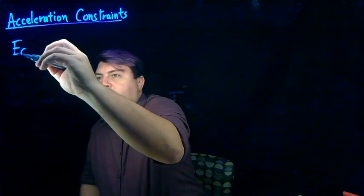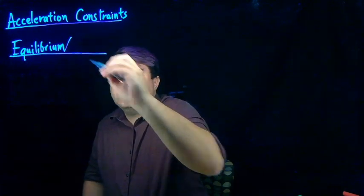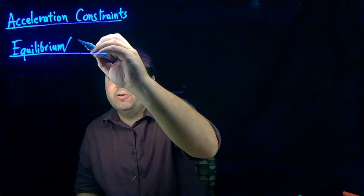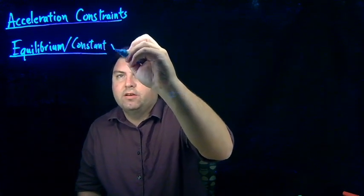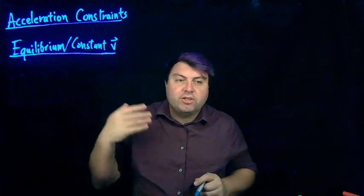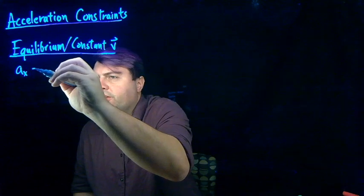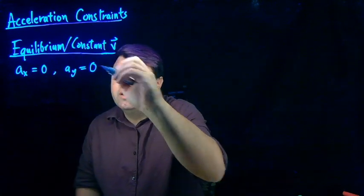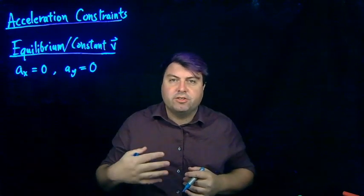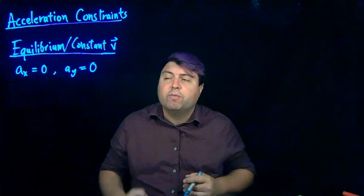If we're told the object is in equilibrium — and we should remember that constant velocity is also a type of equilibrium — our statement is that the object is not changing velocity; it's not accelerating. So our acceleration constraint is that the acceleration in x is zero, the acceleration in y is zero, or in a general sense, the acceleration is zero altogether. That's our first acceleration constraint.